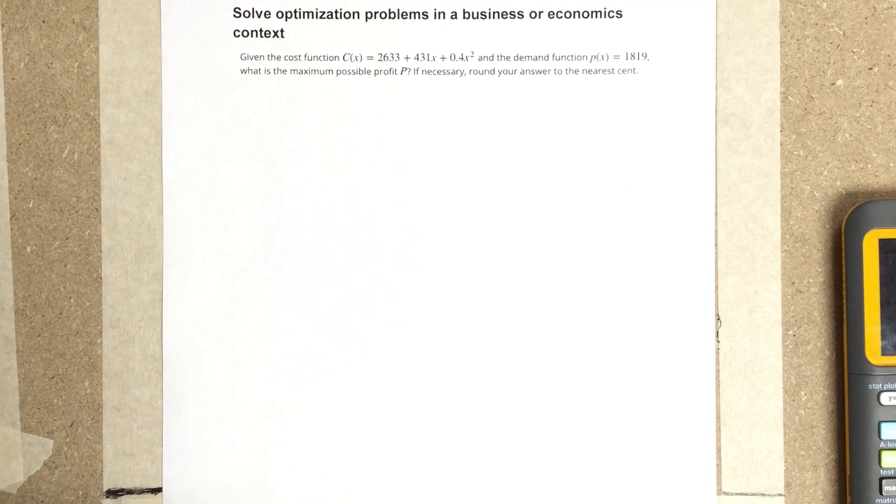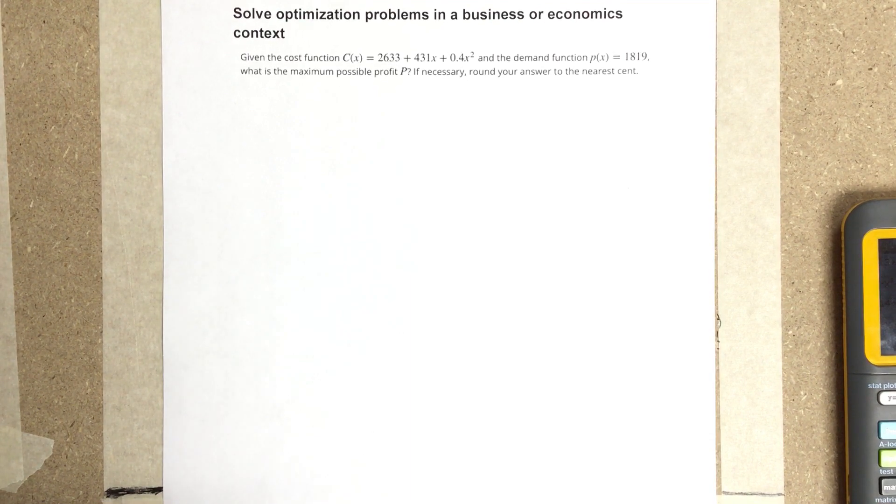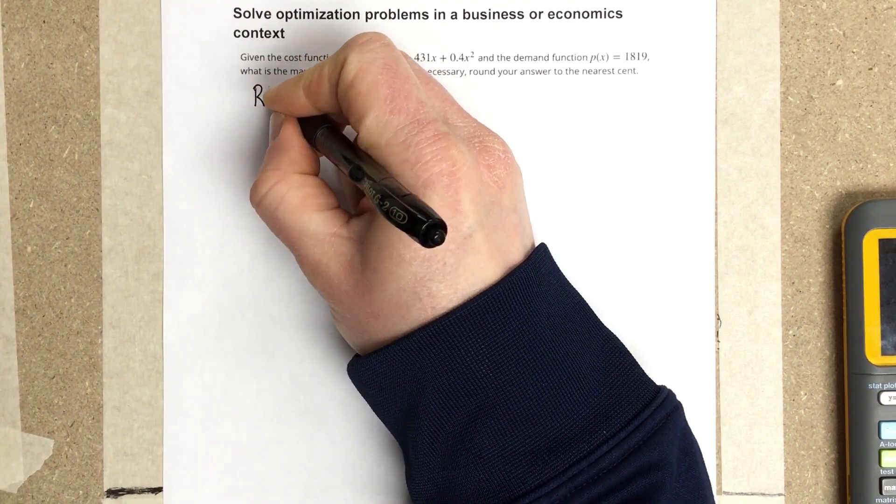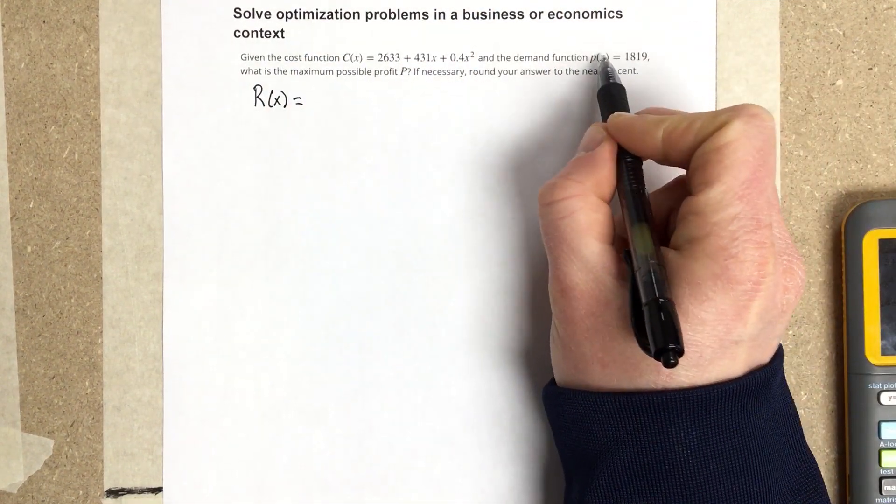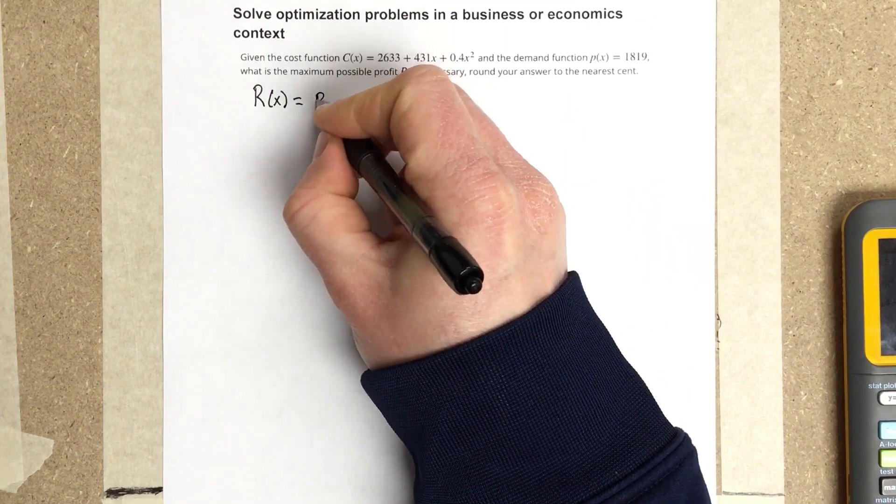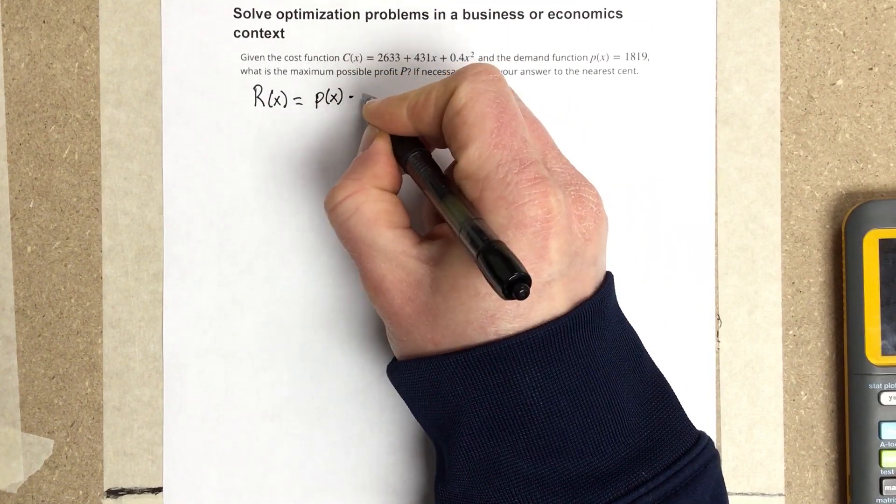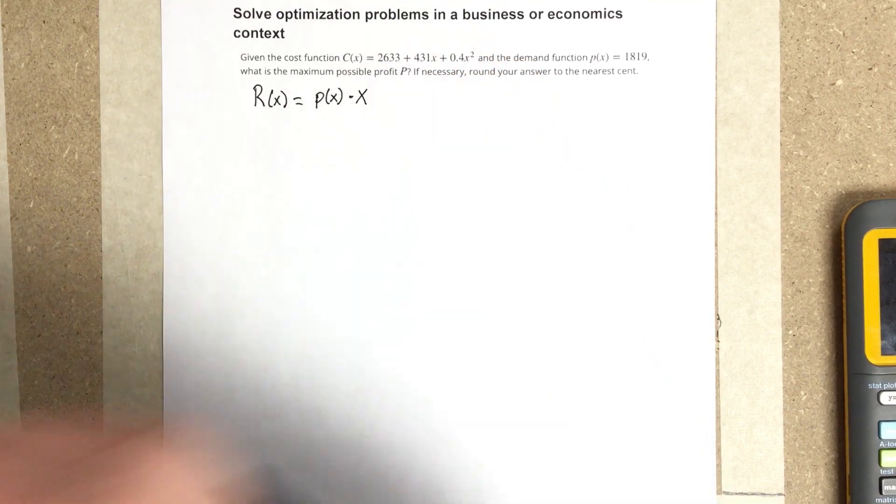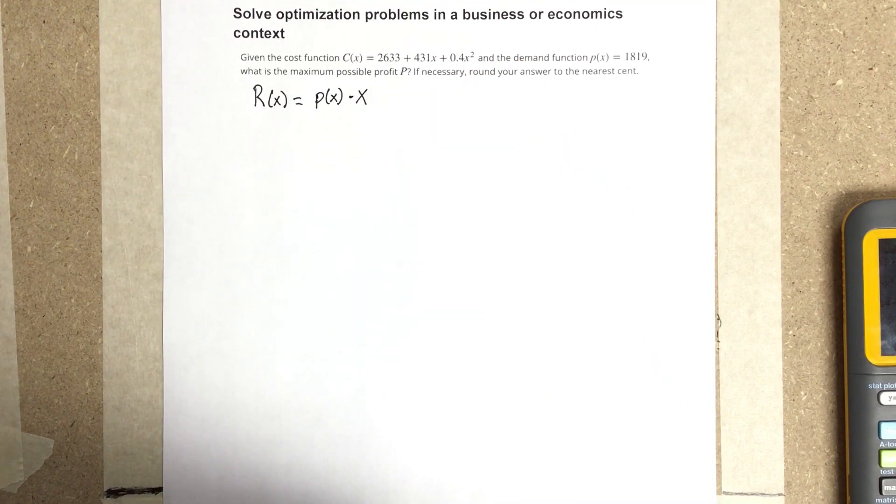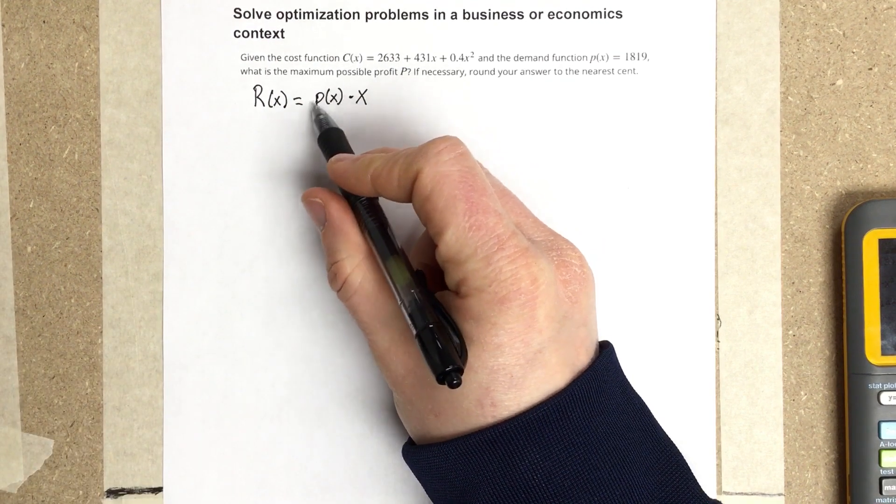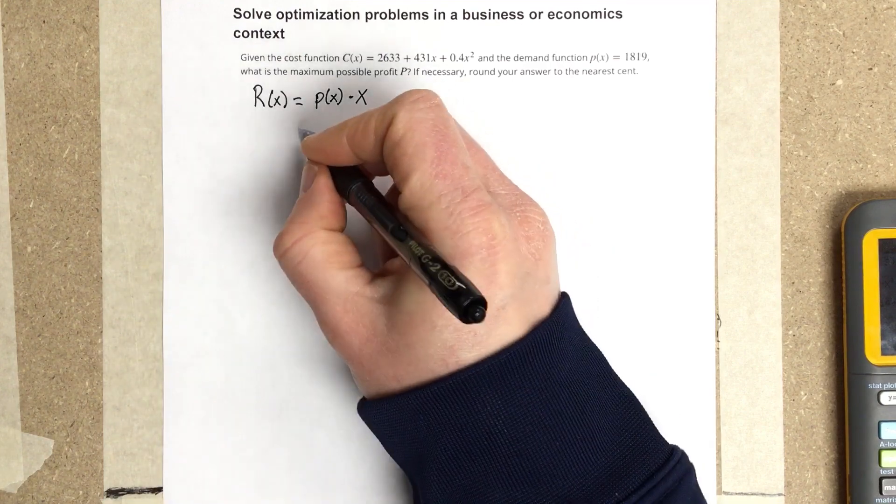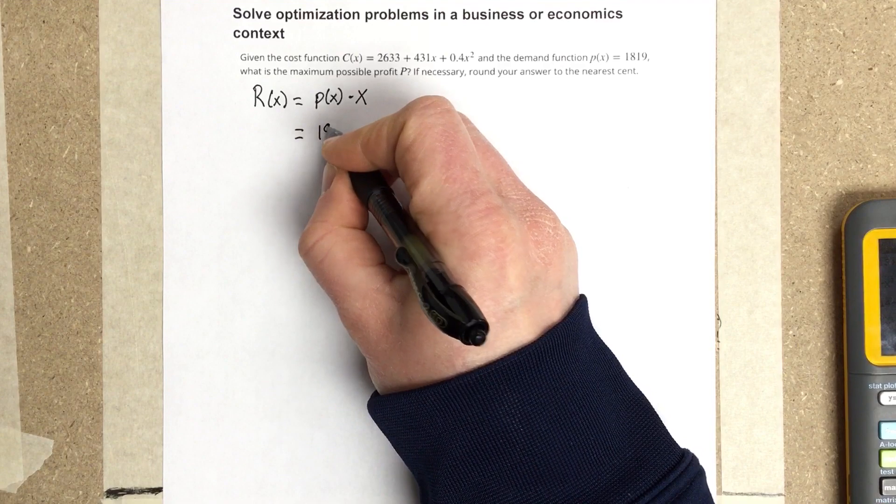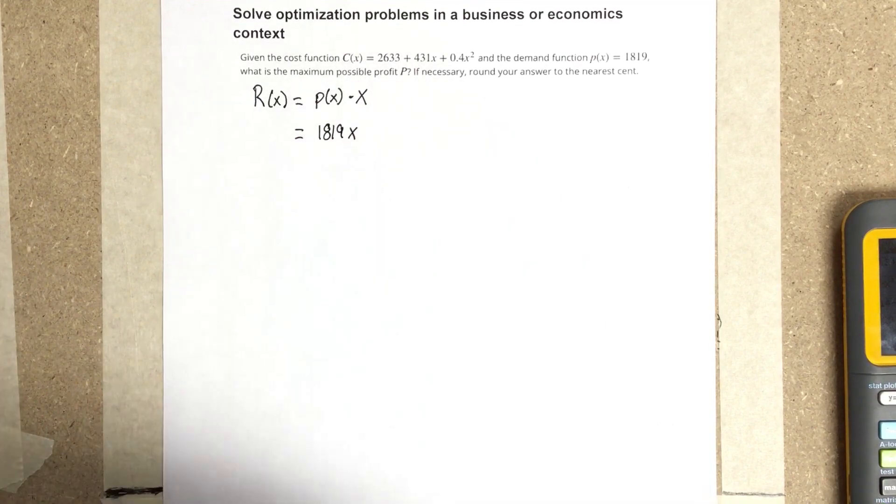They're asking us to maximize profit, and we know that profit equals revenue minus cost. We need to find a revenue equation. The revenue equation R(x) equals the demand for the product, P(x), times the number of items sold. So R(x) = P(x) × x = 1819x.